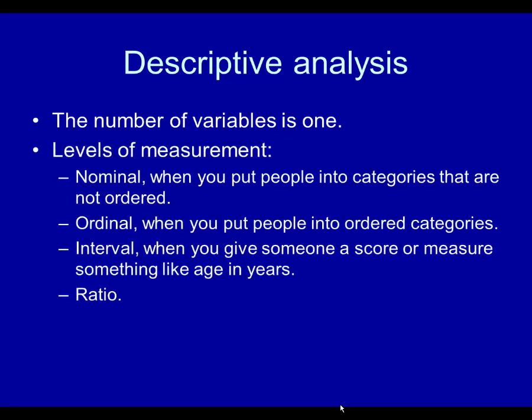Let's look at levels of measurement, which you may become familiar with. I'll quickly review it. Nominal is when you put people into categories that are not ordered, like gender, political party affiliation, and things like that. The second is ordinal. When you put people into ordered categories such as strongly agree, agree, disagree, strongly disagree. Those are categories, but they are ordered from low to high.